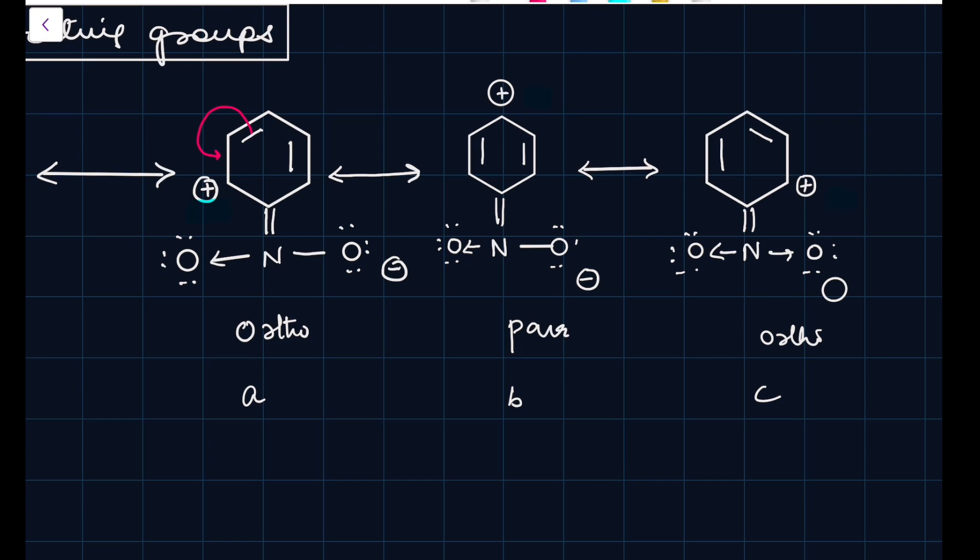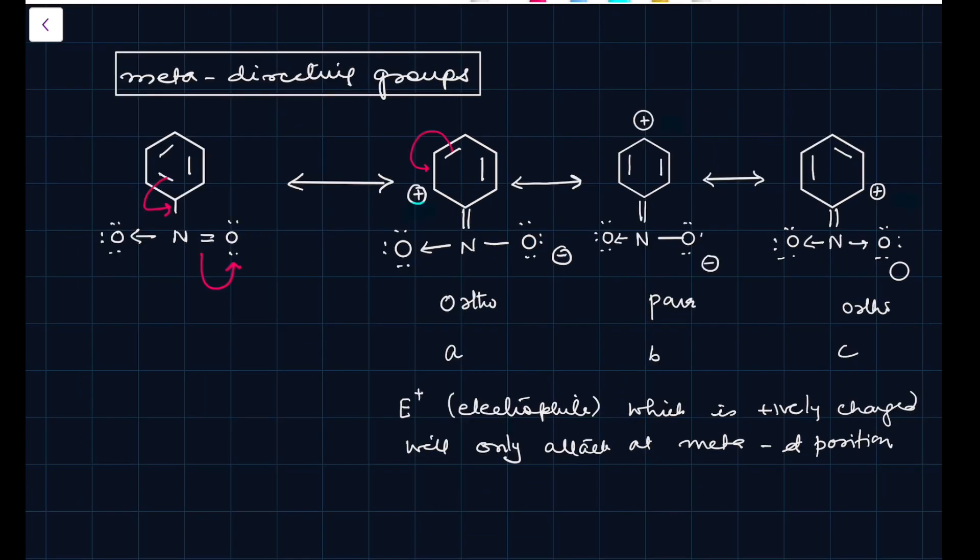If you look at these three diagrams, A, B and C, you will see positive charge at ortho, para and ortho position. So, if there is a positive charge on ortho and para positions, the electrophile, which is also positively charged, will only attack at meta position. If you look in the benzene ring, there is a decrease in electron density. Hence, they are known as deactivating groups. Reaction will be, electrophilic substitution will be slower than in benzene.